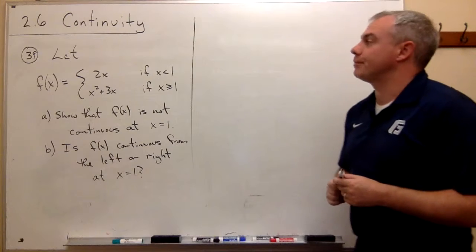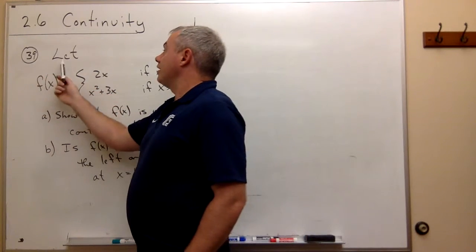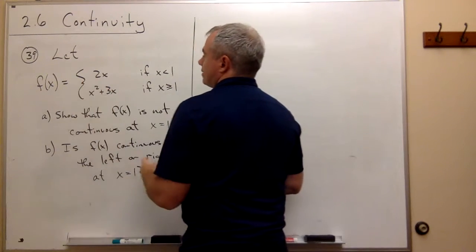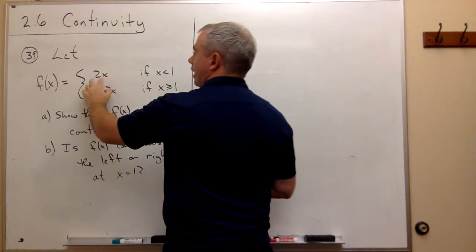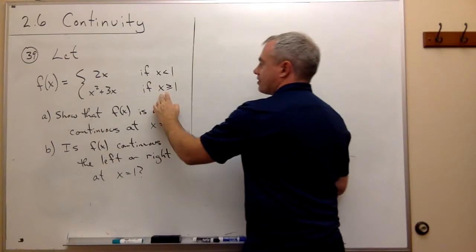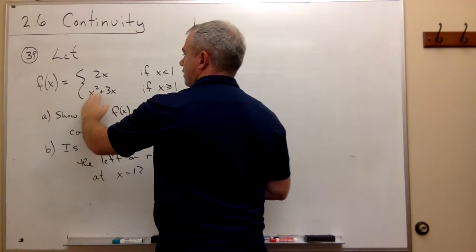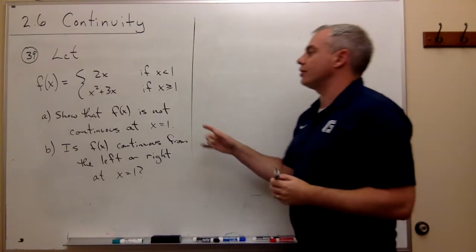All right, our next problem will be number 39. In problem 39, we let f(x) equal the following piecewise defined function. So for values of x less than 1, f(x) is 2x, and if x is greater than or equal to 1, we have f(x) equals x squared plus 3x. And we want to do two things here.